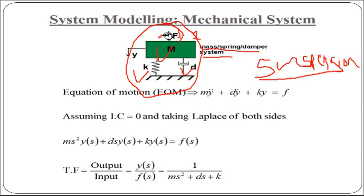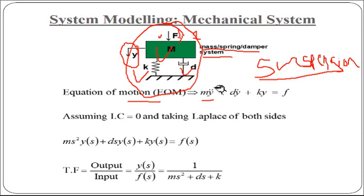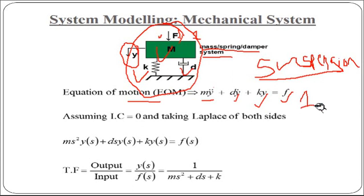Now we are going to study the basic concept of the mass-spring-damper system. The mass-spring-damper system consists of mass, stiffness (spring), and damping. We apply a force to this system. This mass-spring-damper system is essentially your suspension system — the kind used in automobiles.